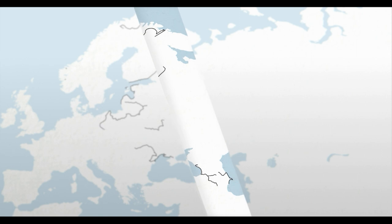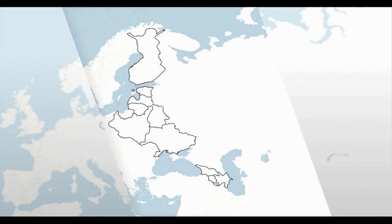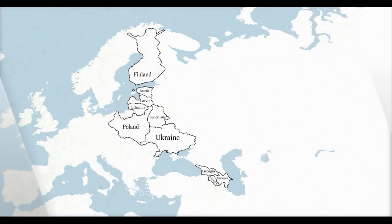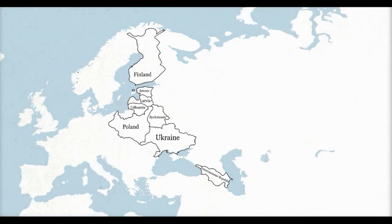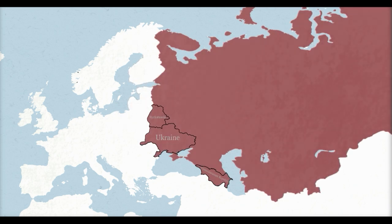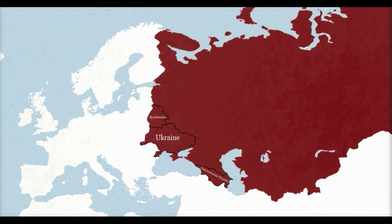During the war, many nations managed to secede from the Russian Empire, but following their victory, the Red Army took most of these countries back to install communist governments, before merging them to create the Soviet Union in 1922, consisting of Russia, Belarus, Ukraine, and the Transcaucasian Republic.